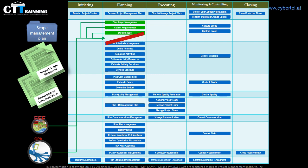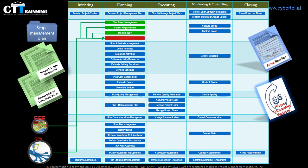After performing the tools and techniques, we came out with the scope baseline and project document updates. The scope baseline will be needed in seven other processes: in the develop project management plan process, because it is a part of the project management plan; in the define activities process; the estimate costs process; and determine budget. Also, we will need it in identify risks and perform qualitative risk analysis processes, and we will need it to validate the scope in the monitoring and controlling process group. The second output is an updating activity for the project documents, such as requirement documentation.